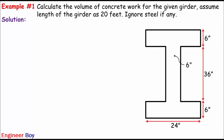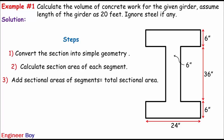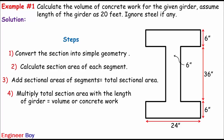We'll come directly into the solution. In the solution, just remember these four steps. In the first step, we'll convert this section into simple geometric shapes. Then we'll calculate the section area of each segment. In the third step, we'll add the sectional areas of each segment — that's the total sectional area. And then we'll multiply the total sectional area with the length of the girder to get the volume of concrete work.